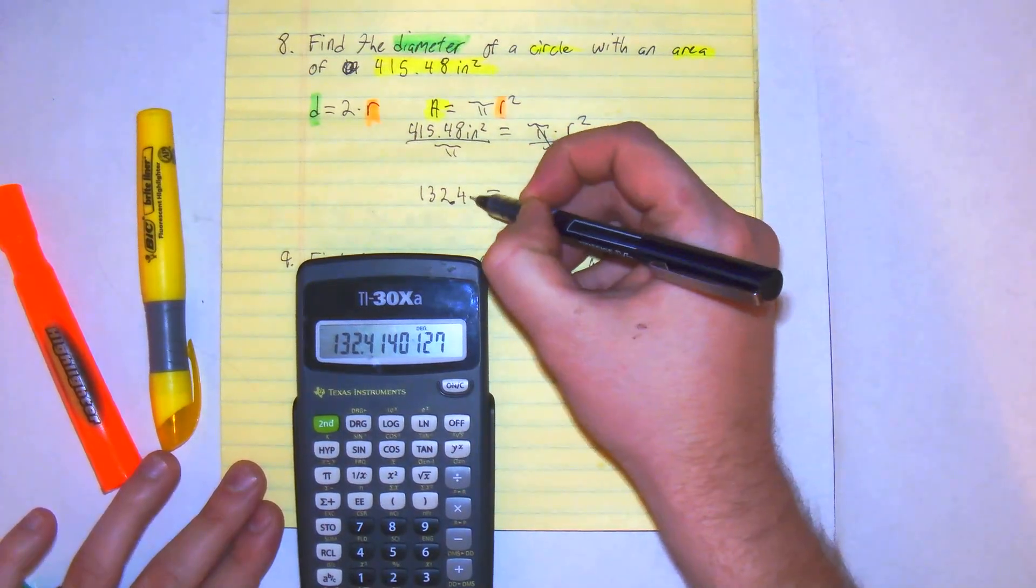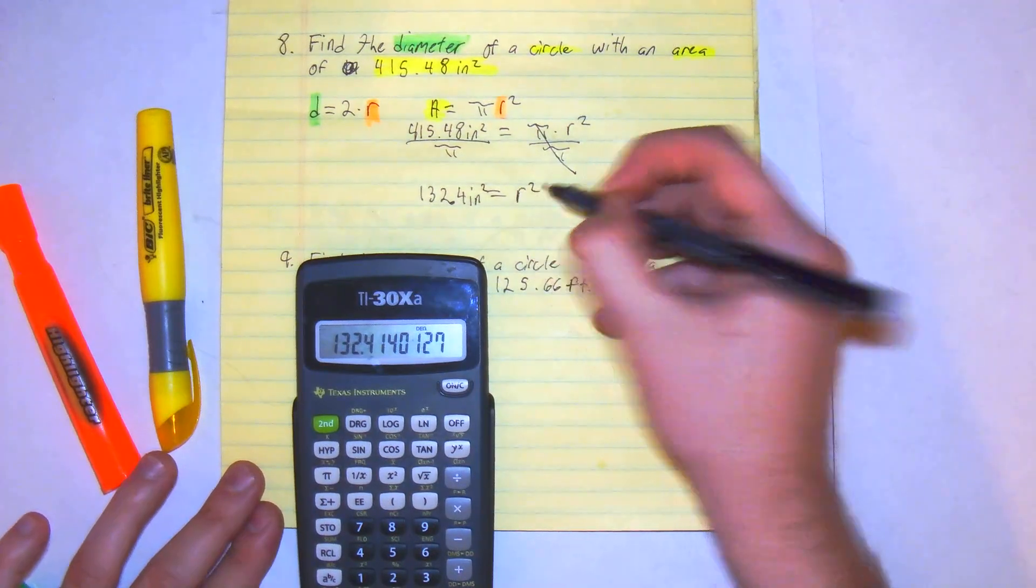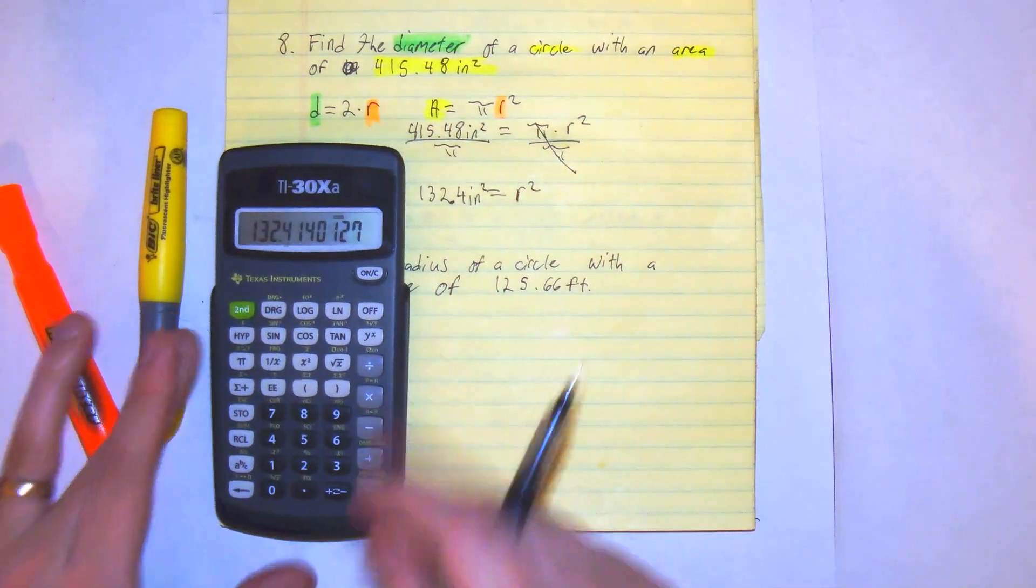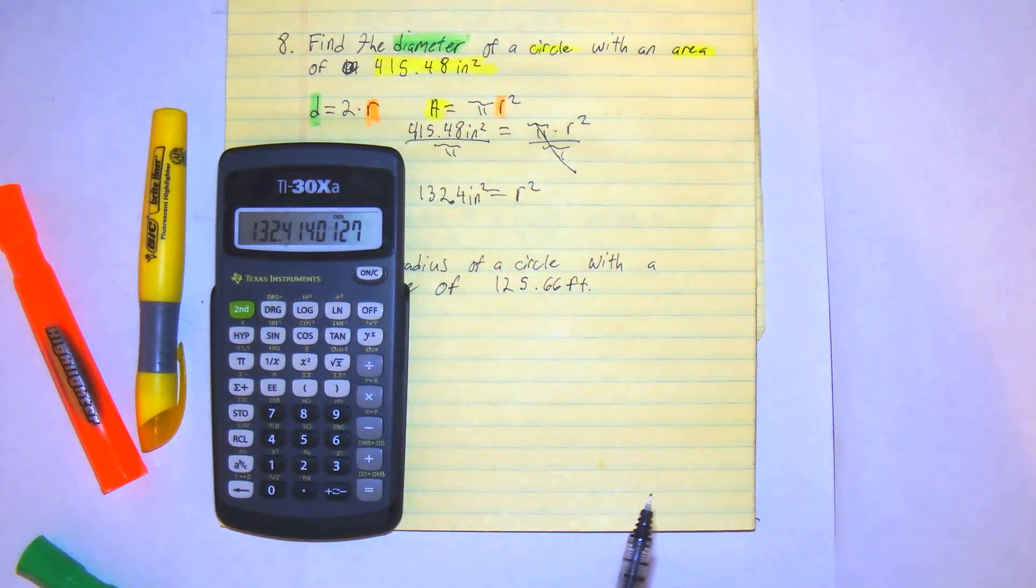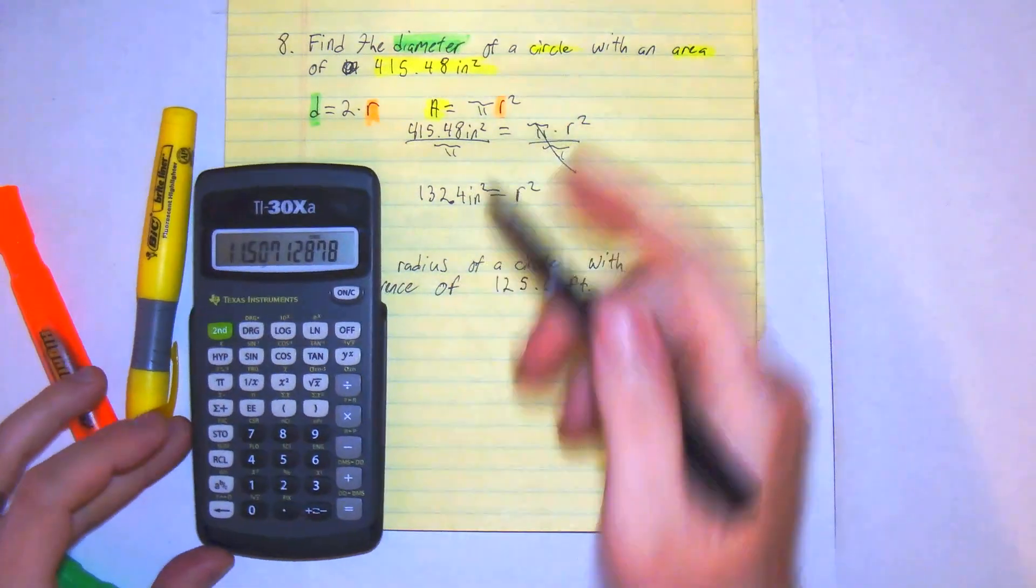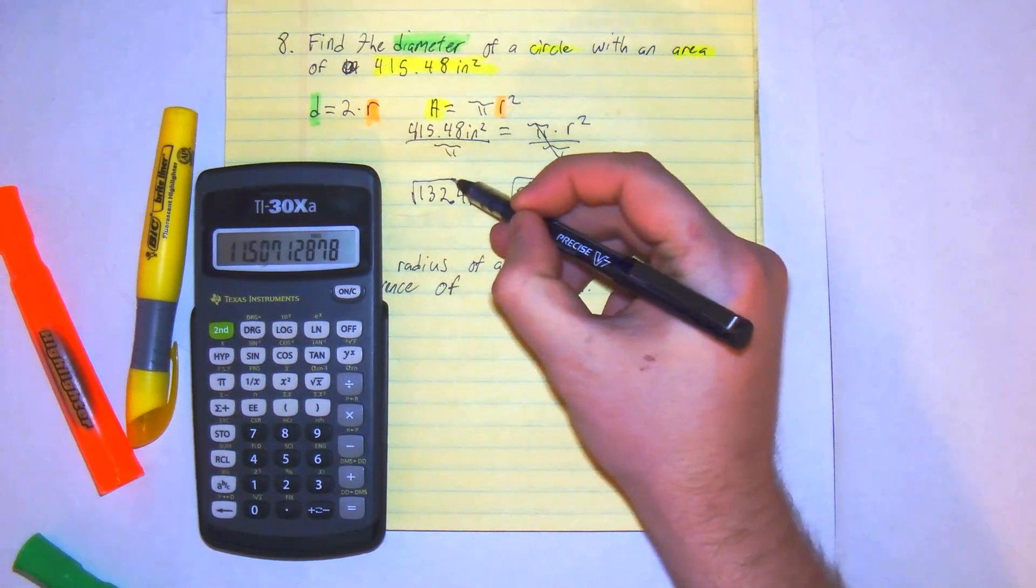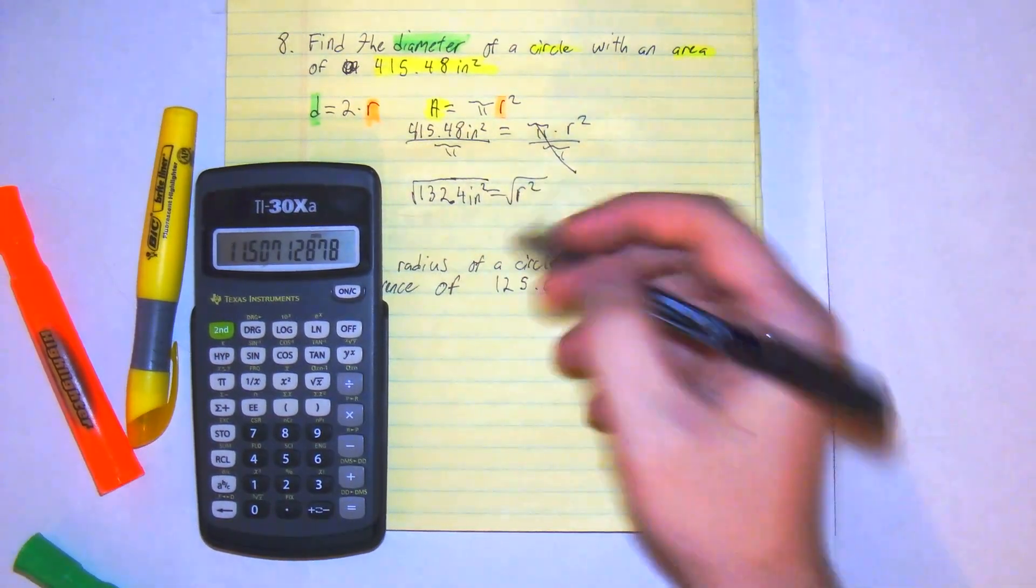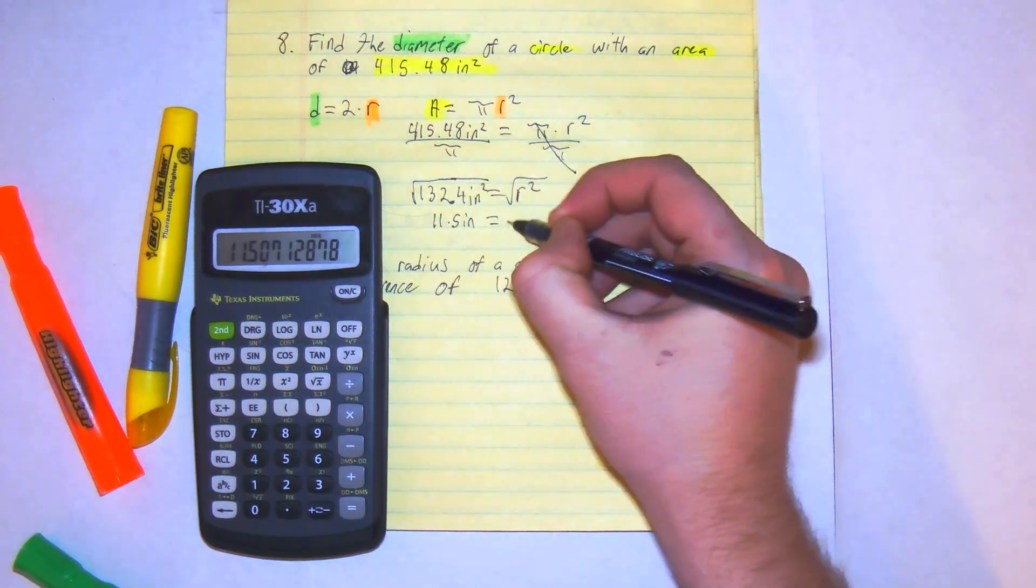132.4 equals r². From here, I'm going to keep all these decimals so I get a more exact answer. I'm going to square root both sides. And you get 11.5 inches equals the radius.